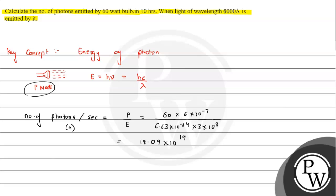So this is the number of photons in 1 second we have calculated. We need it for 10 hours, so therefore the number of photons emitted in 10 hours will be equals to...